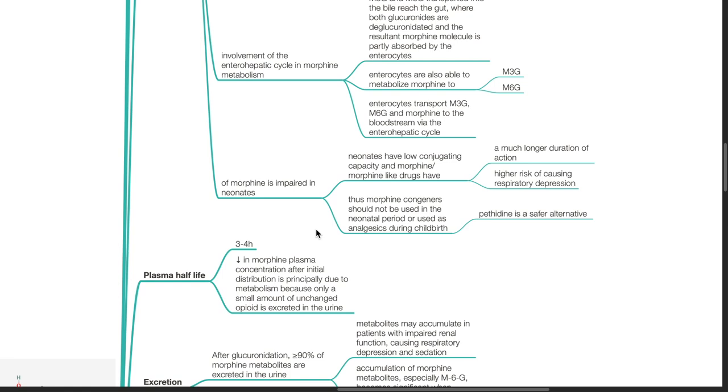Metabolism of morphine is impaired in neonates. Neonates have low conjugating capacity and morphine or morphine-like drugs have a much longer duration of action and there is a higher risk of causing respiratory depression and sedation. Thus, morphine analogues should not be used in the neonatal period or used as analgesic during childbirth. Pethidine is a safer alternative.